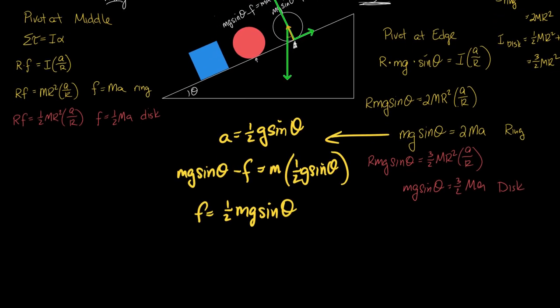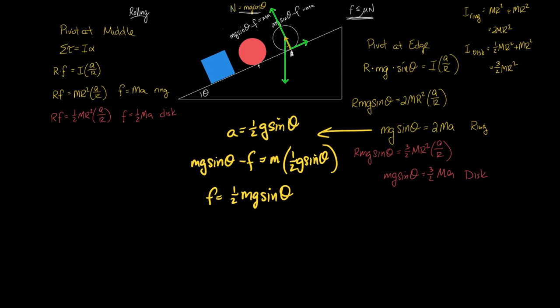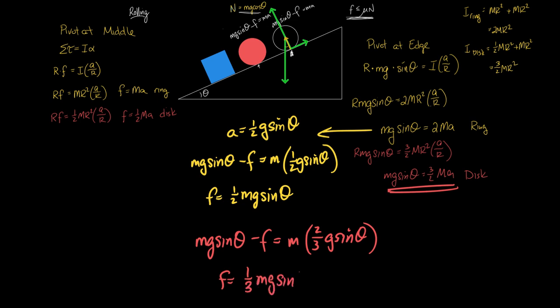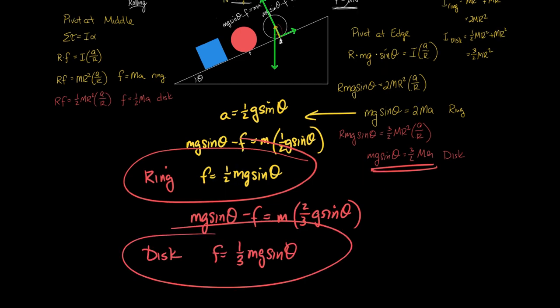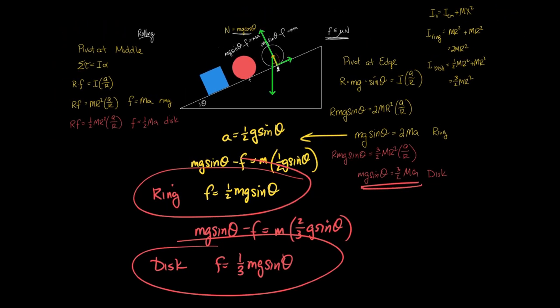Now, you guys can pack up, but because I'm going to post this video, I'm doing the other one, which is M G sine theta minus friction equals M times two thirds G sine theta. Solve that for friction, and I get one third M G sine theta. That's a disc. That's a ring. More friction for the ring than the disc. So, regardless of which way you go about dealing with the rotation of the disc or the ring, clearly it takes more friction to turn the ring.